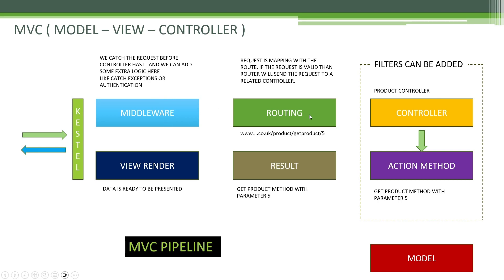The next middleware is routing. You can consider routing as our request being mapped with a route — that's what routing does, but it's a crucial action. For example, if you send a request to www.something.com/product/getproduct with an ID, routing defines which controller will be initialized — in this example, the product controller — and which action method, get product, will be initialized. Routing defines everything and initializes the controller and action method.